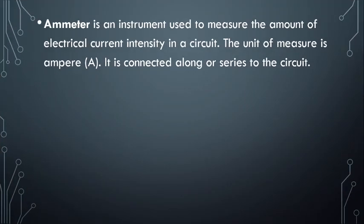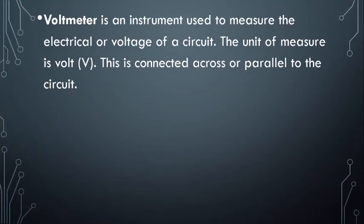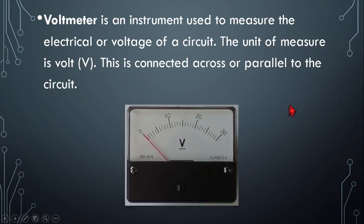Next we have the ammeter, an instrument used to measure the amount of electrical current intensity in a circuit. The unit of measure is ampere and it is connected in series to the circuit. We also have the voltmeter, an instrument used to measure the electrical voltage of a circuit. Its unit is volts and it is connected across or parallel to the circuit.